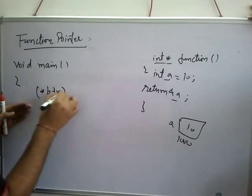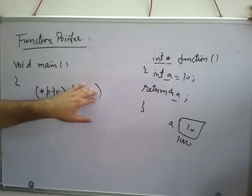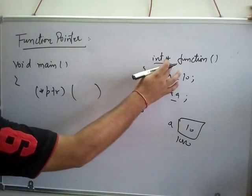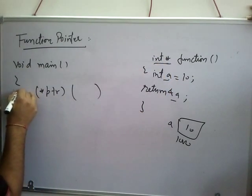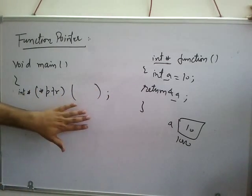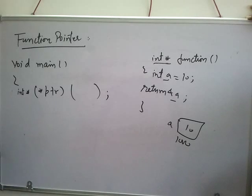ptr is a pointer to a function which takes no arguments, so here we'll keep it empty. And its return type is int star, so here int star. First of all, our duty is to create this pointer.